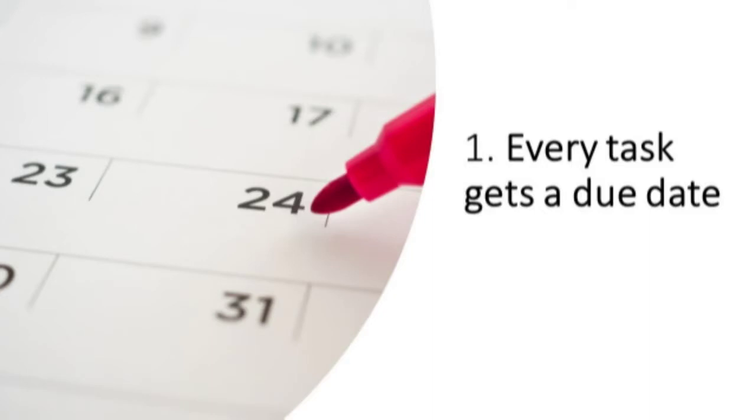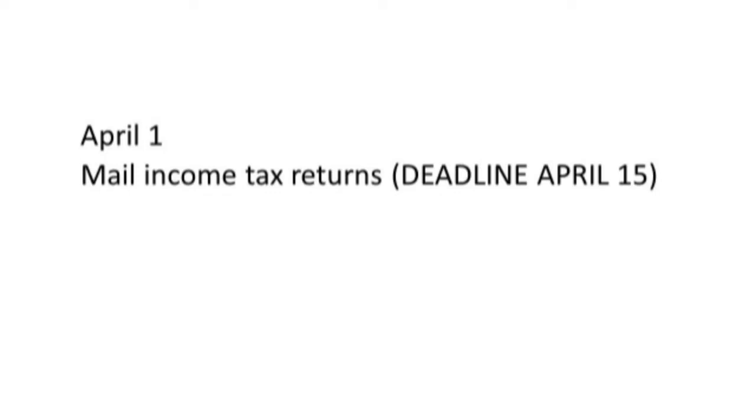Regardless of what you use, give every task a due date. That date answers the question: when do I want to see that task again? Not the deadline. If a task has a real, true, drop-dead deadline, I simply add that as a part of the name of the task. For example, I have to get the income tax returns in the mail by April 15th — I want to see that on April 1st so I can act on it, and I also see the actual deadline.